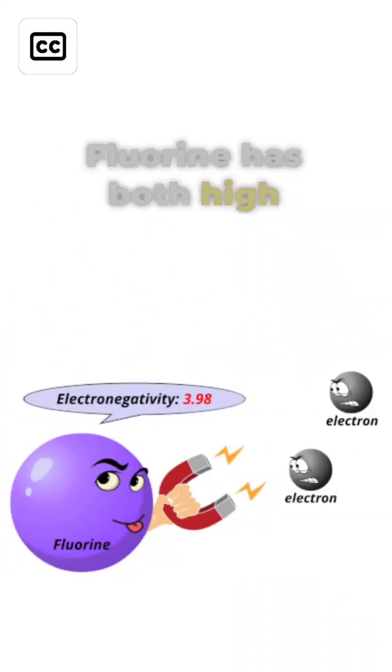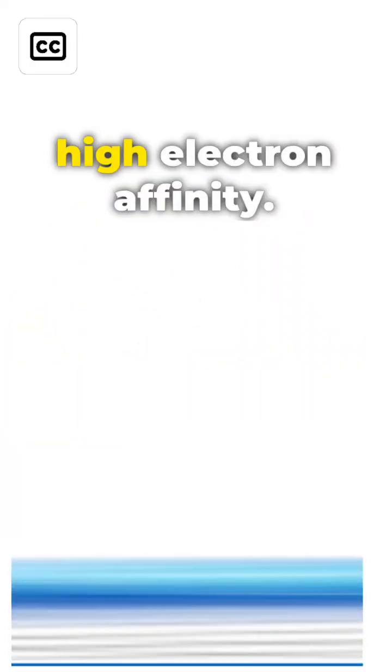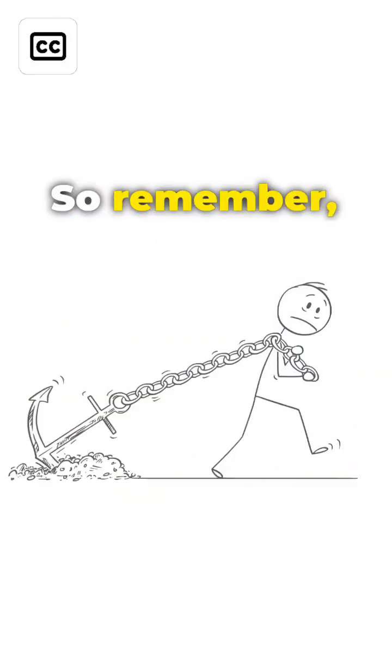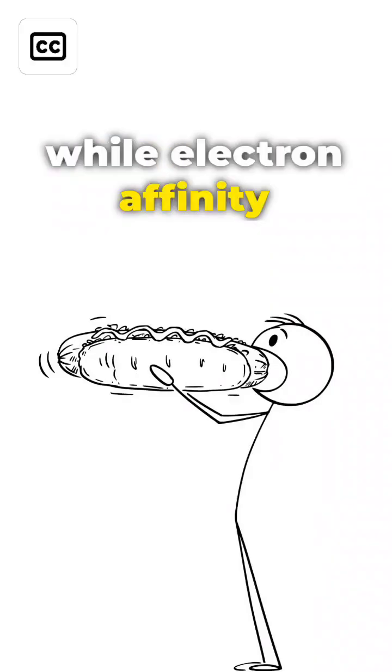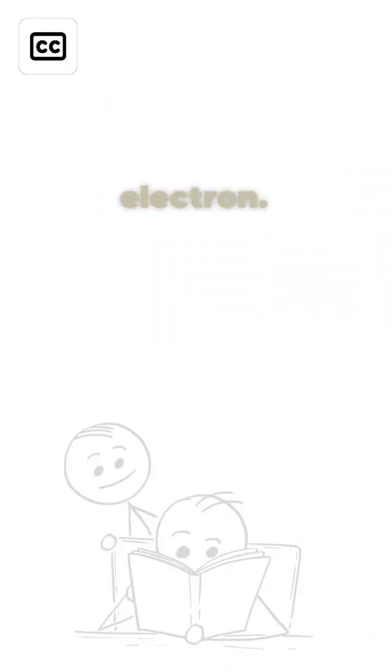Fluorine has both high electronegativity and high electron affinity. So remember, electronegativity is about pulling bonded electrons, while electron affinity is about accepting a new electron.